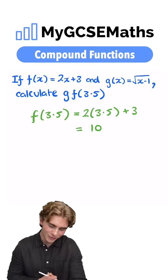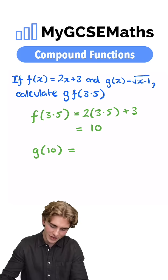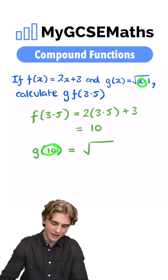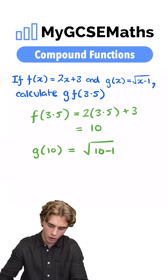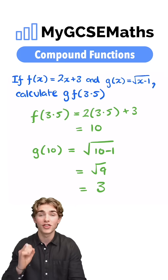Now we can plug this into g(x). So g(10) = √(10 - 1) = √9 = 3.